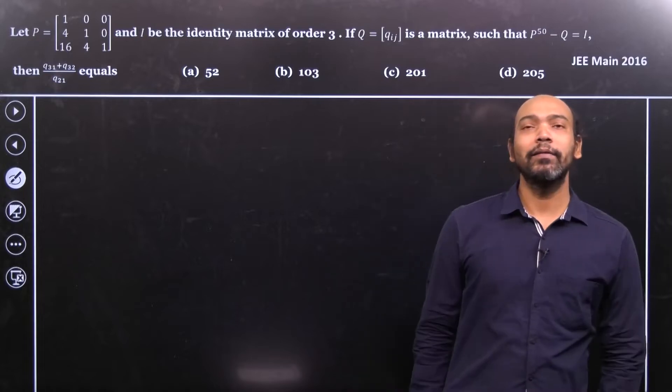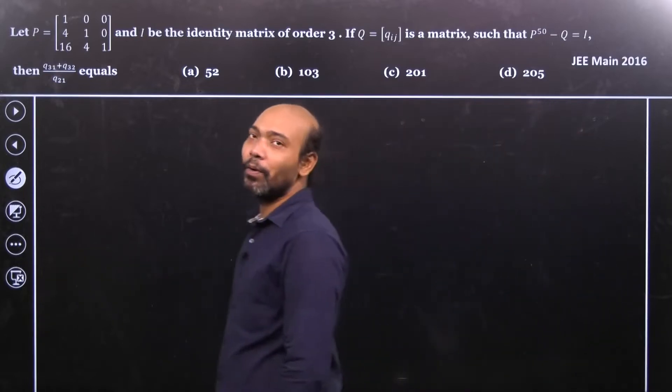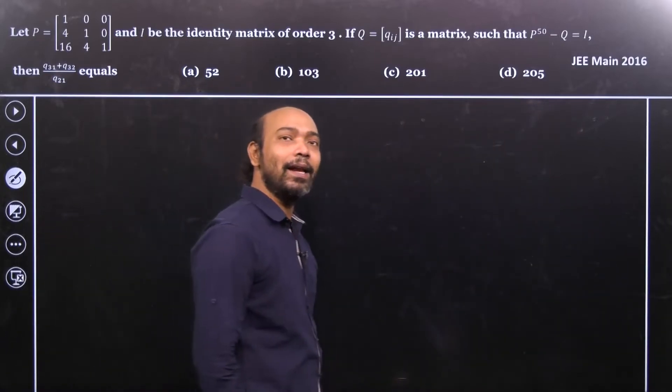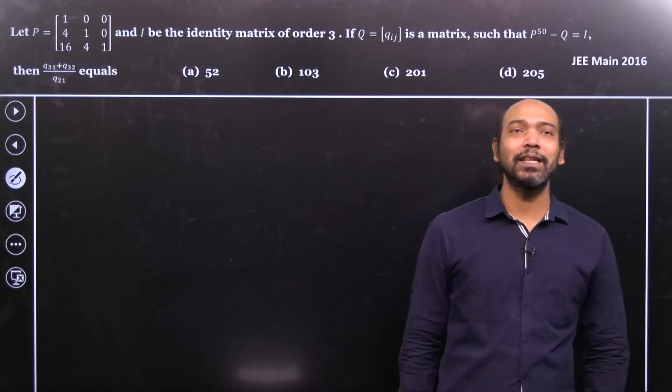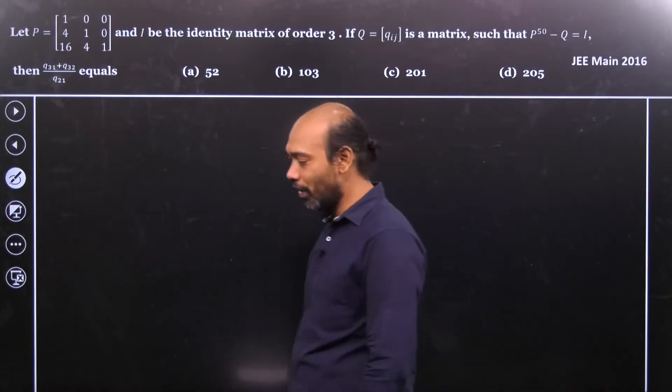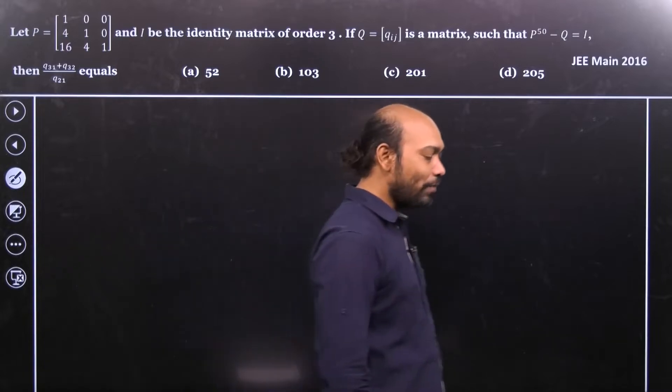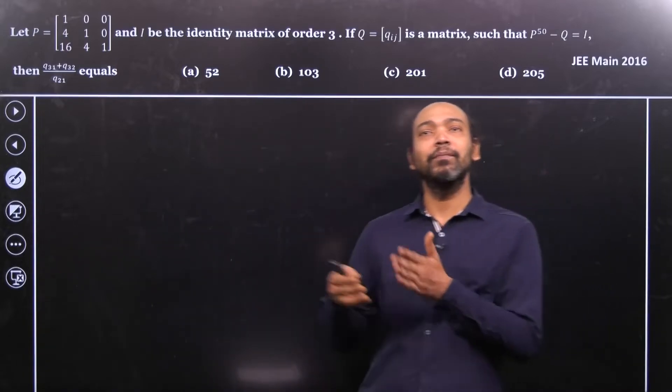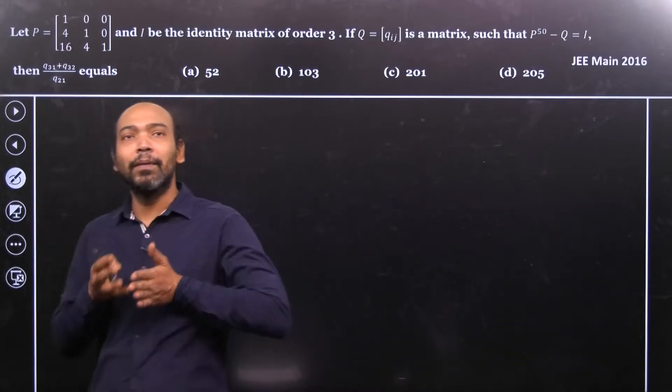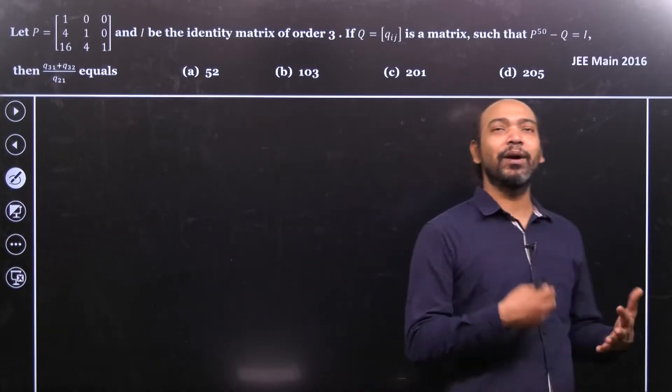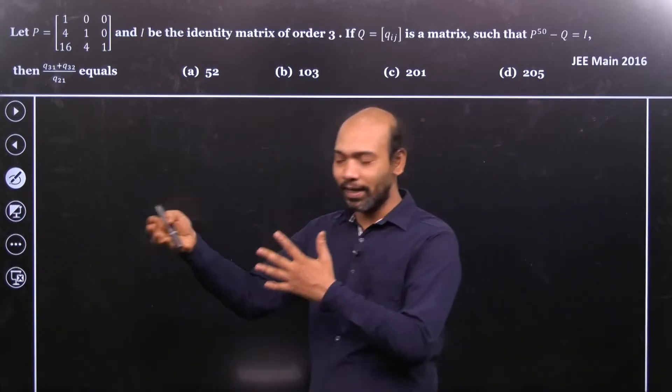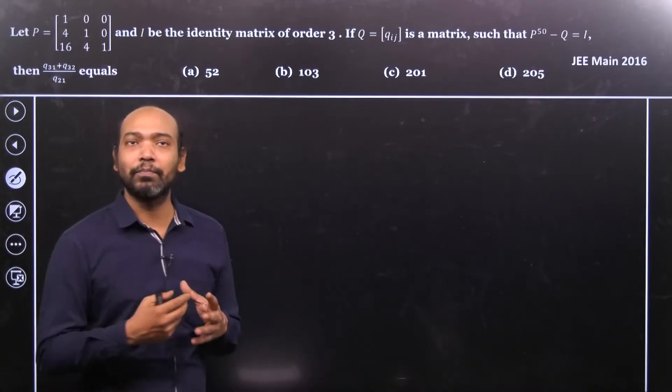So see that we are required to find out P to the power 50 where P is given. So how we calculate P to the power 50? Obviously, it is very trivial to think that nobody gives you a problem so that you need to multiply P to the power 50 by multiplying 50 times or maybe P square multiplied by cube 6 to 9 something. It is not the process.